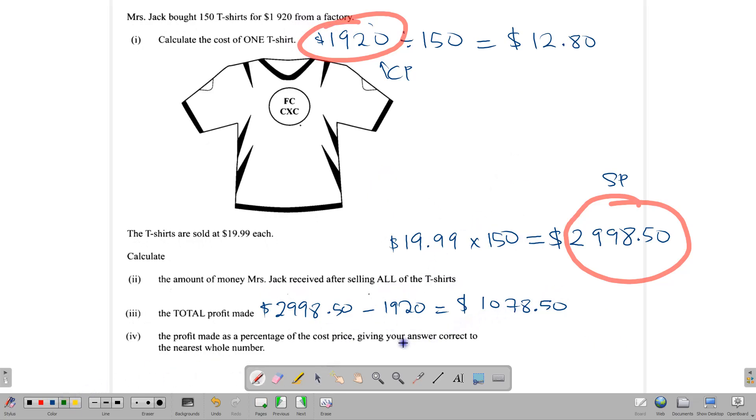Now, our profit is $1,078.50. So the profit percent is profit over cost price times 100. So let's write that in. And the profit is $1,078.50, cost price is $1,920, and we're going to multiply that by 100.